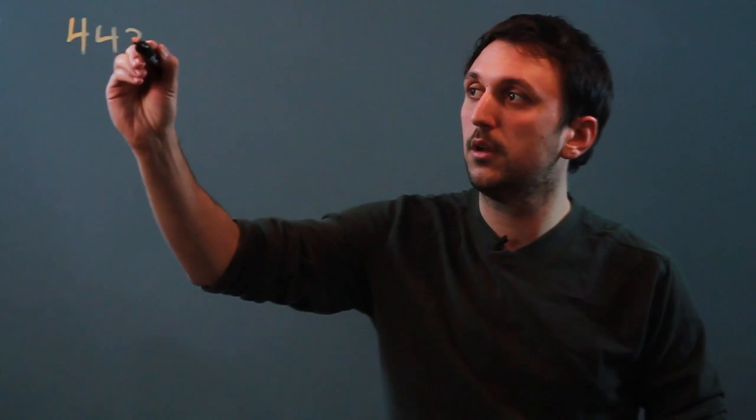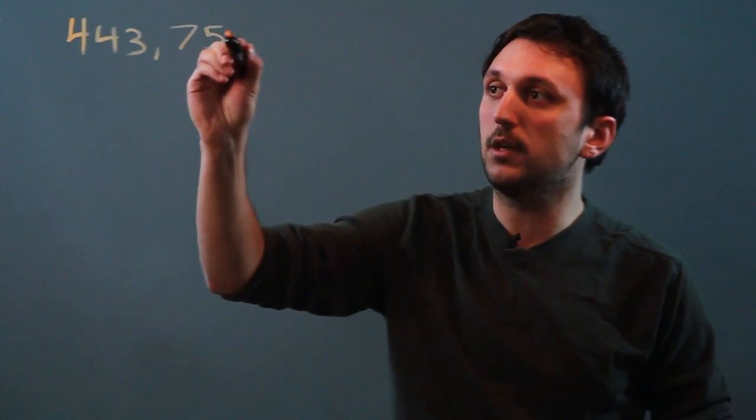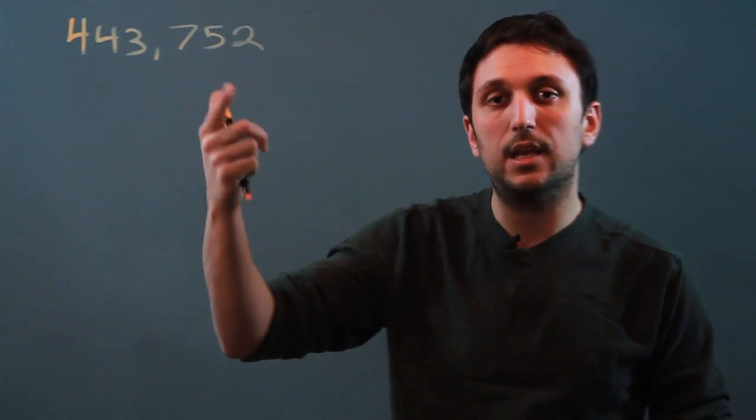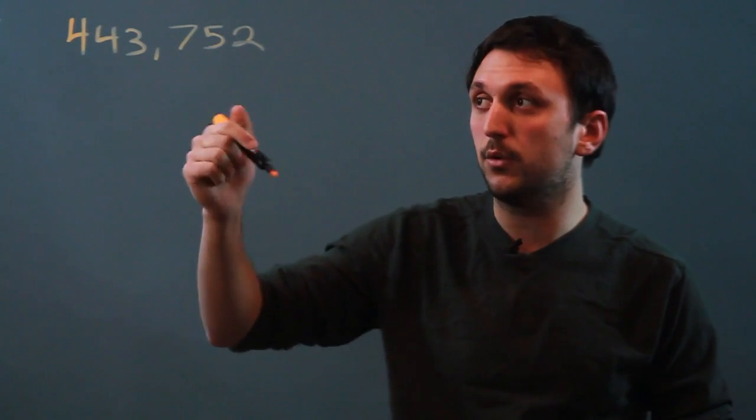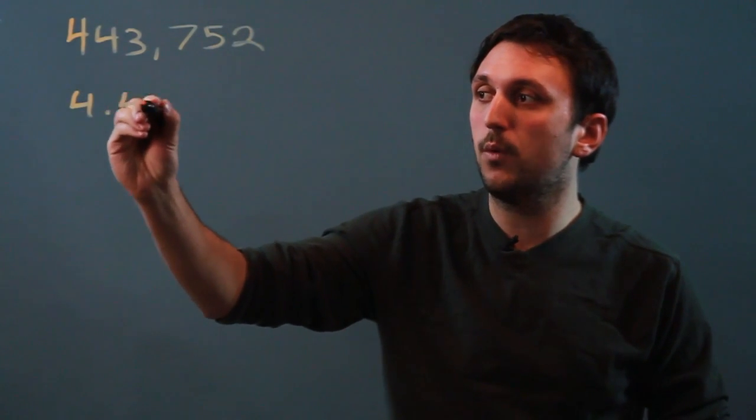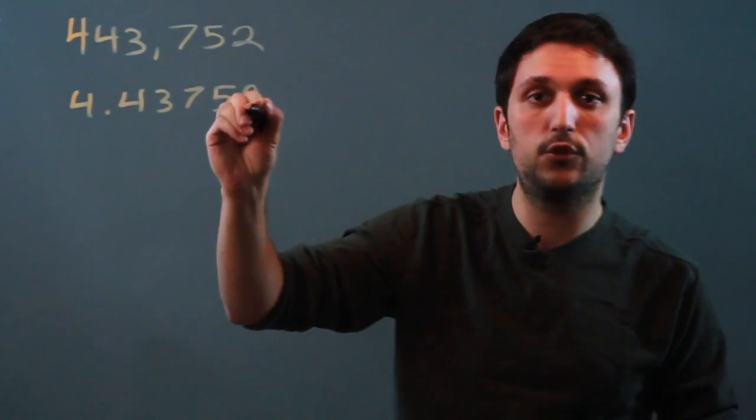So, for example, let's take the number 443,752. Now, this is a real number, but it's not normal. To make it normal, we have to put it in scientific notation, meaning we want this to be 4.43752.